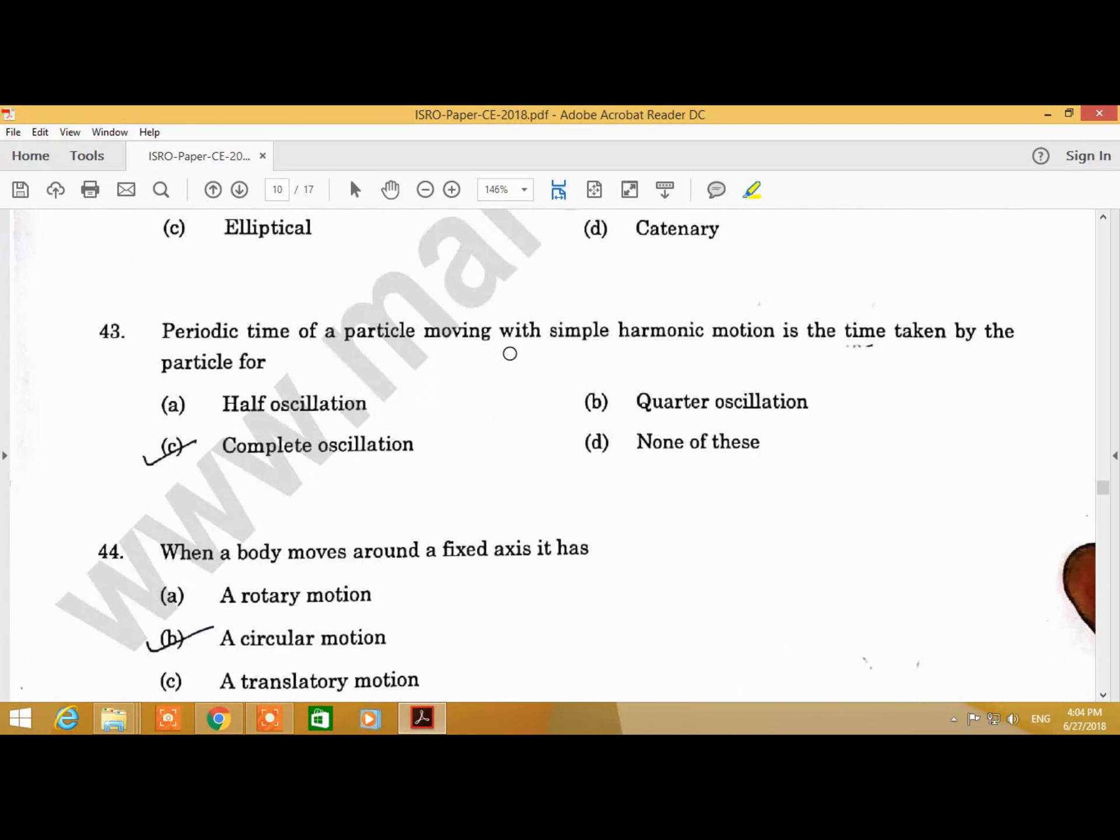Question Number 43: Periodic time of a particle moving with simple harmonic motion is the time taken by the particle for. Answer is C, complete oscillation.